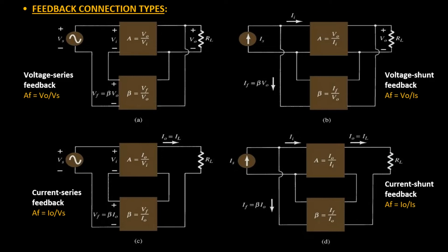Hello everyone. In the last class we developed the basic understanding of the terms voltage series, voltage shunt, current series, and current shunt, used to represent different feedback connection types. Here I am going to repeat it just once for you.